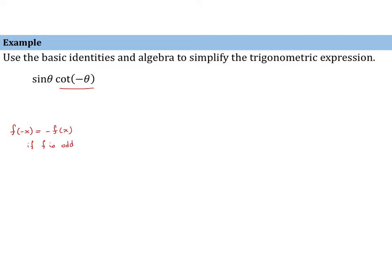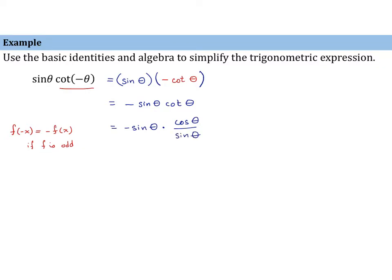Therefore, we can take sine of theta and multiply it by negative cotangent of theta. We did not factor out the negative from inside the argument; instead, we use the property that cotangent is odd. So we have sine of theta times negative cotangent of theta, which is negative sine of theta times cotangent of theta. Then using a quotient identity, negative sine of theta is multiplied by cosine of theta over sine of theta. Sine of theta cancels, and we are left with negative cosine of theta.